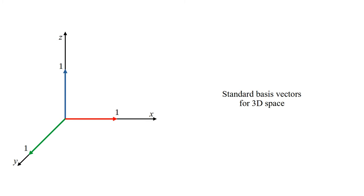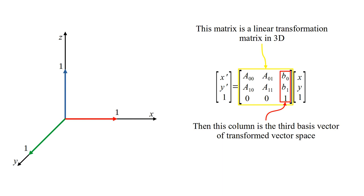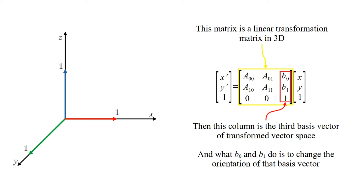These are the standard basis vectors for 3D space. This matrix is a linear transformation matrix in 3D. The third column is the third basis vector of the transformed vector space. B0 and B1 change the orientation of that basis vector — they move the tip of the third basis vector on the z equals one plane.